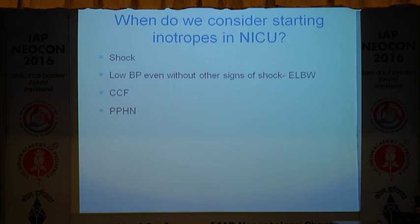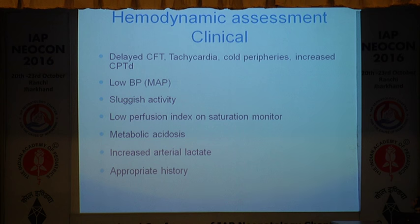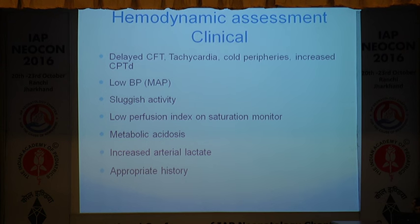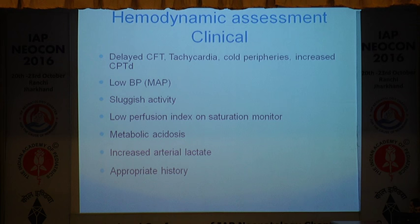When we consider starting an inotrope, we would start in shock, in low blood pressure even if there are no other signs of shock, in congestive heart failure, and also in pulmonary hypertension. What are our tools to assess the hemodynamic state? In the NICU we have capillary refill time, heart rate, cold peripheries, difference in temperature between central and peripheral parts of the body, low activity, low perfusion index on the saturation monitor, metabolic acidosis, and elevated lactate. All these things should be backed by a good history — whether there is volume loss, septicemia — so we can determine whether this is hypovolemia or distributive shock.